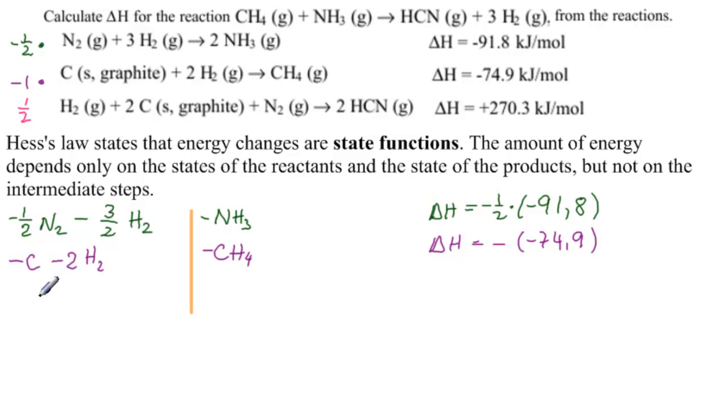And this one is one half, so one half H2 plus one half times two, that would be 1C plus one half N2, and on this side we have HCN. And delta H now is one half of 270.3.